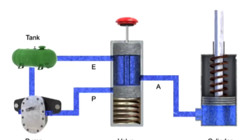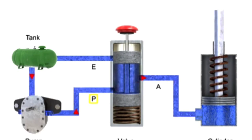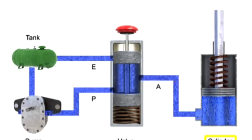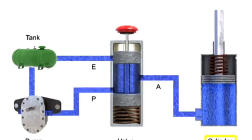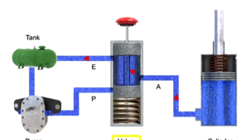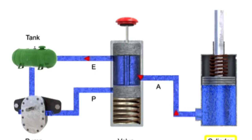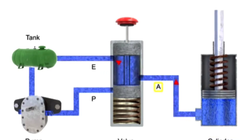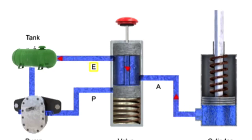Three-way directional control valves have many applications in fluid systems. One of the most common is for the control of single-acting cylinders. In this application, fluid is pumped from a tank to pressure port P. With the valve in the normal position, fluid is blocked. When the valve is actuated, fluid flows from pressure port P through outlet port A to the cylinder. The cylinder extends and remains extended until the valve changes positions. When the valve de-energizes, the spool returns to position 1, pressure port P is blocked, and exhaust port E is opened. The cylinder retracts and fluid flows from the cylinder through port A and out exhaust port E, returning to the tank.